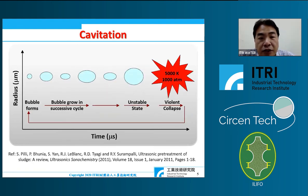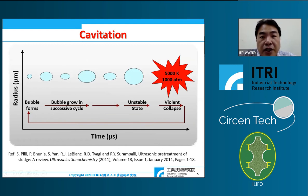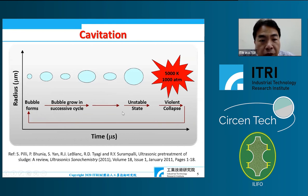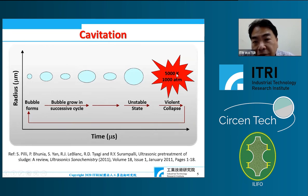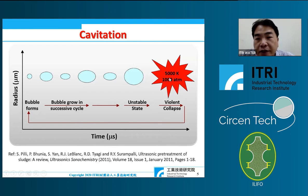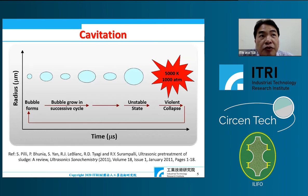The mechanism is cavitation: ultrasound generates bubbles in water, and when those bubbles collapse they create a hot spot — a very small area of extremely high temperature and pressure produced in a very short time. Sludge surrounding the bubble is struck by this high pressure, causing decomposition of the sludge structure. This is the desired effect for sludge hydrolysis.